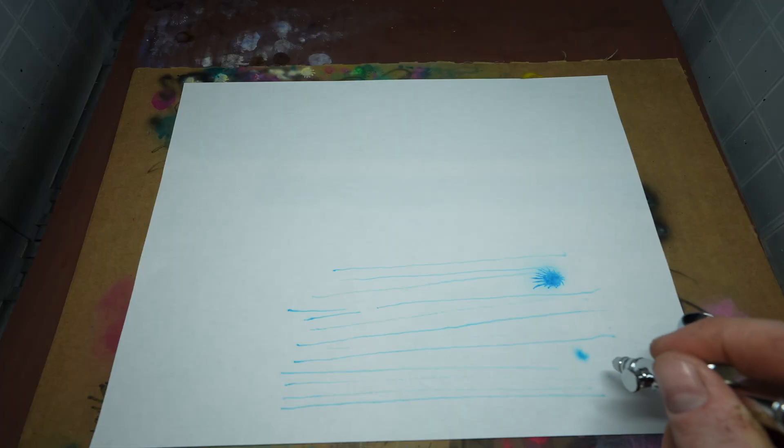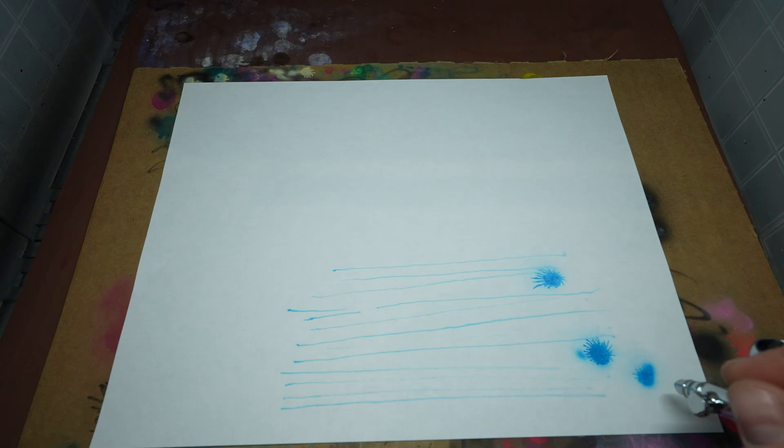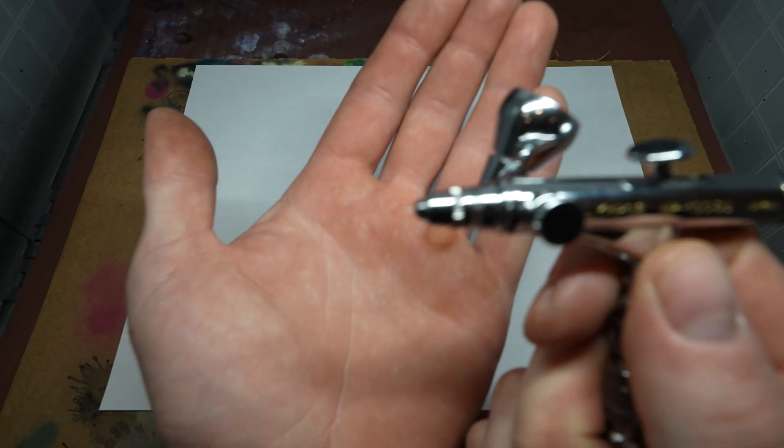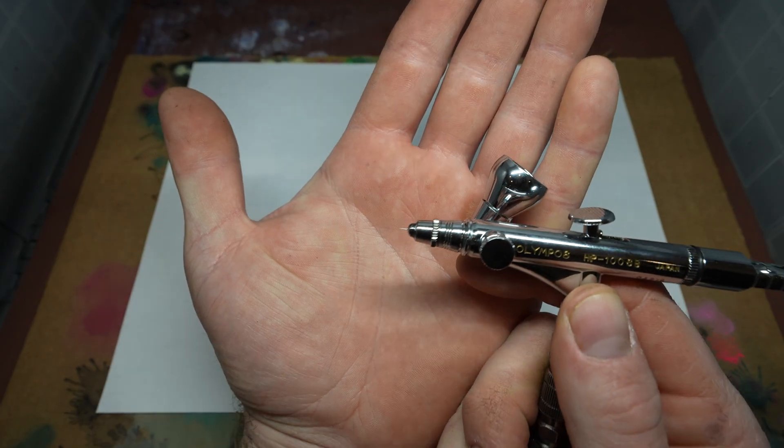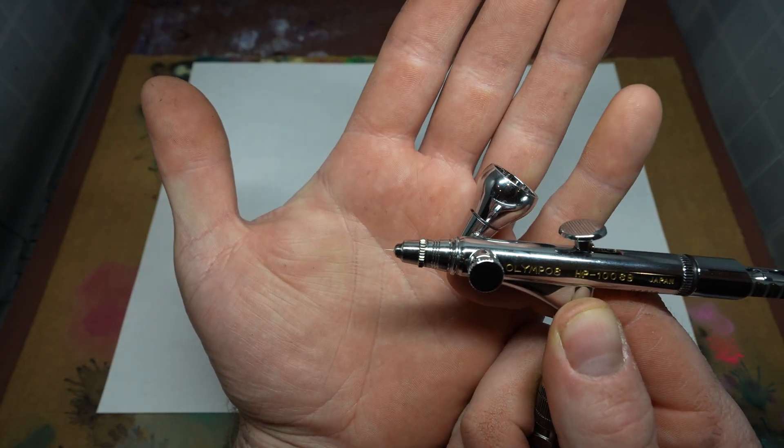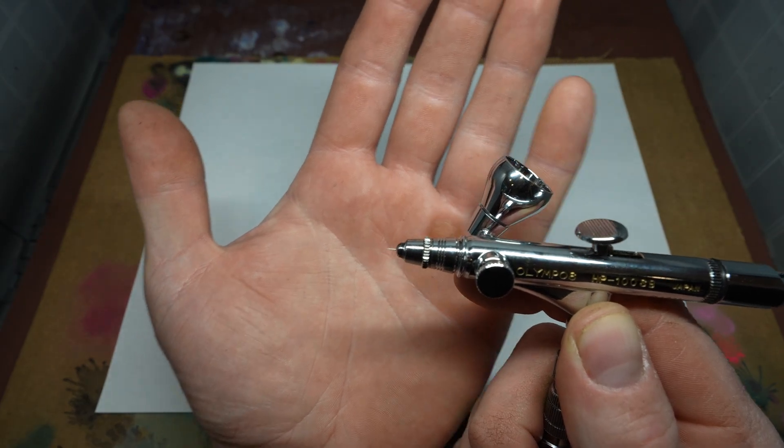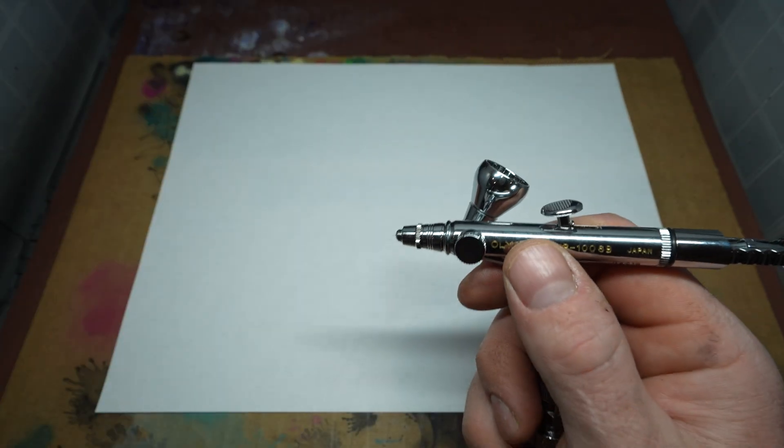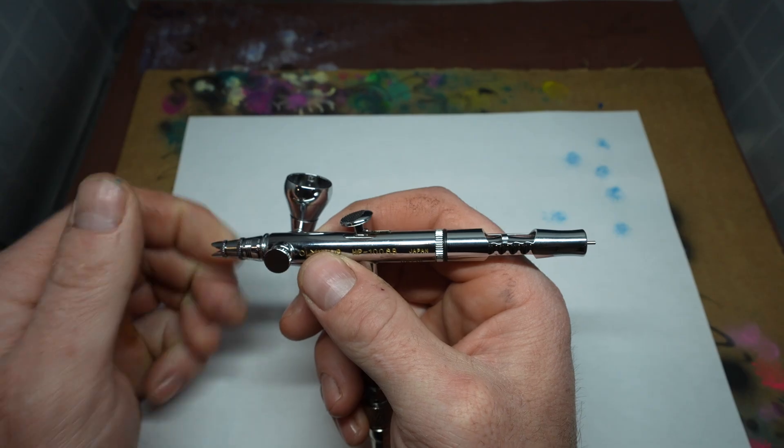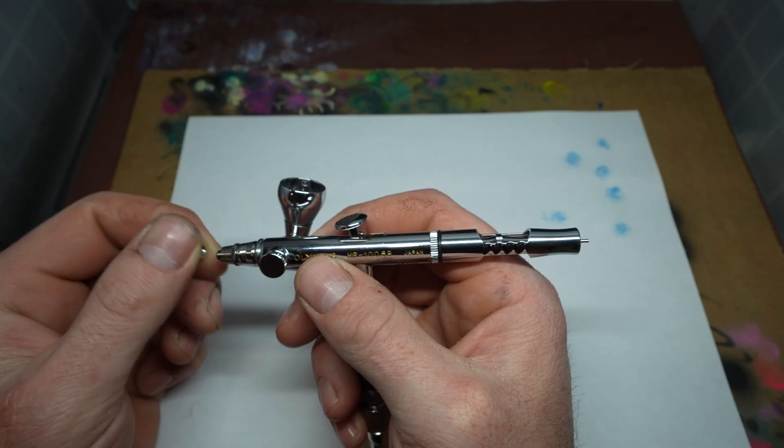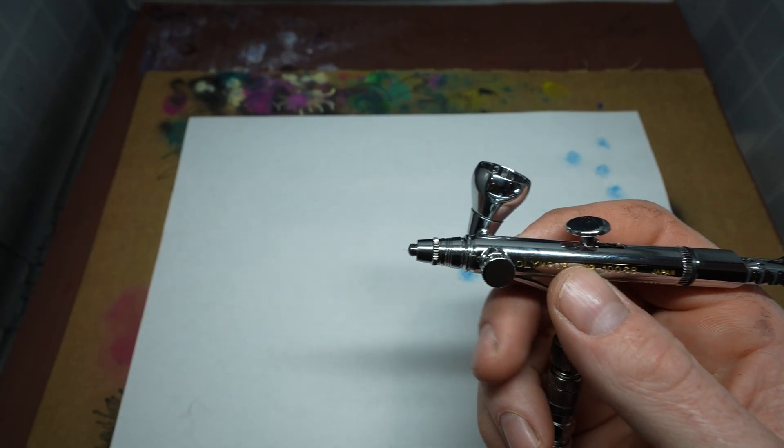I'm not a jet engineer, but I've spent enough time with these things to notice patterns. The Olympos needle has a longer stick-out and a sharp acute grind. The new Iwata needles have a more obtuse angle and less exposure. That means less surface area for paint to dry on.